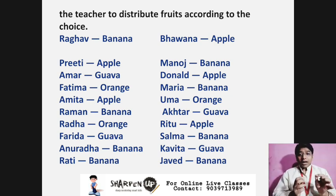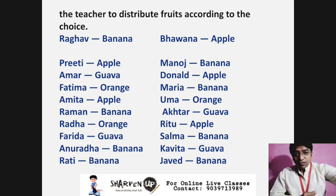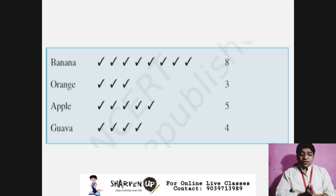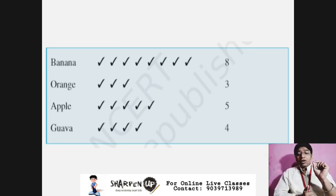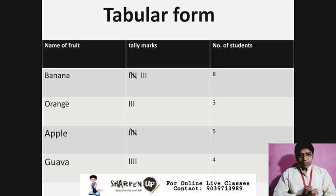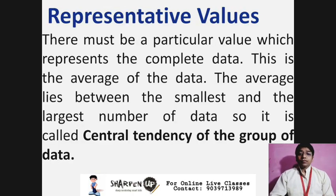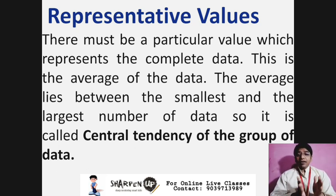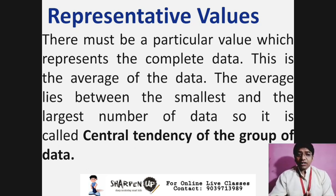Since our purpose is to know how many fruits of each type to take, the names of the students are irrelevant. We can represent this information in tabular form. From this, we can easily infer how many fruits of each type to take. There must be a particular value which represents the complete data — this is the average of the data. The average lies between the smallest and largest numbers of the data, so it is called the central tendency of the group.